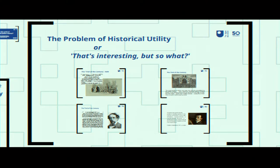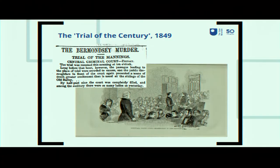To start thinking about that, I'd like to consider a particular crime which took place in 1849, billed at the time by some as the trial of the century. On the 9th of August 1849, Maria Manning and her husband Frederick planned and executed the murder of Patrick O'Connor, who was a moneylender. They buried his body under their kitchen floor, then split up and fled — not very successfully, because Maria was caught in Edinburgh and Frederick was later caught in Jersey.